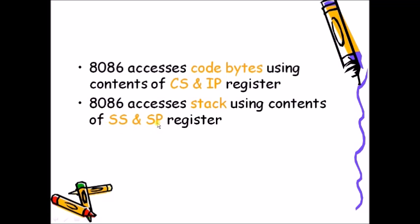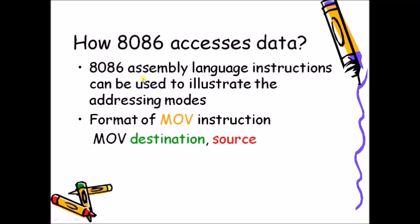8086 accesses the stack using the contents of SS and SP — adding SS and SP gives the physical address inside the stack segment. To illustrate how 8086 accesses data, we will use the MOV instruction, which is mainly used for copying the source operand into the destination operand.